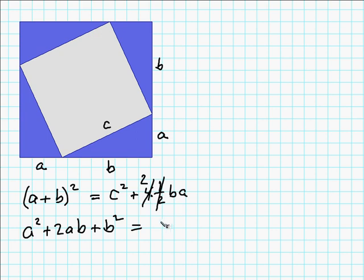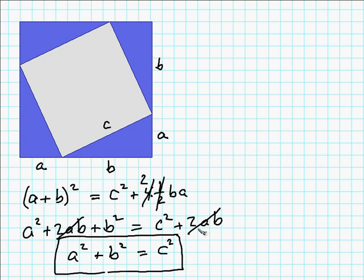On this side, we have C squared plus 2AB. Well, look at that. If I subtract 2AB from both sides, I'm left with A squared plus B squared is equal to C squared. And that is the Pythagorean theorem, and we've just proved it algebraically.